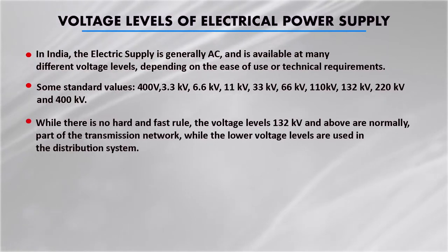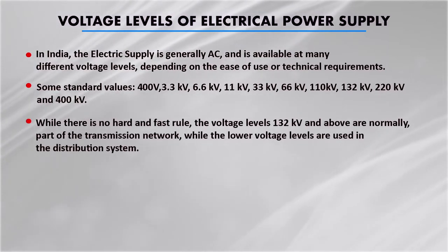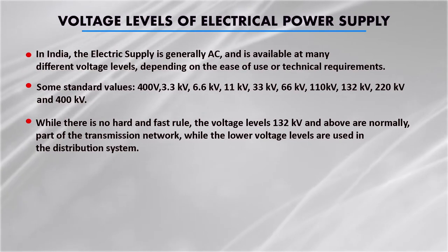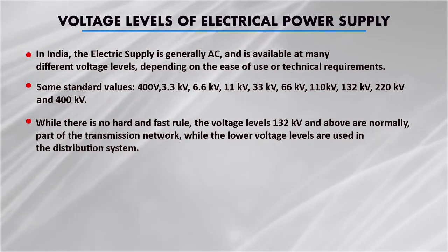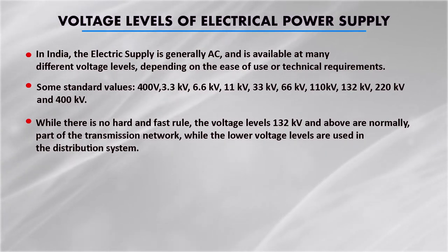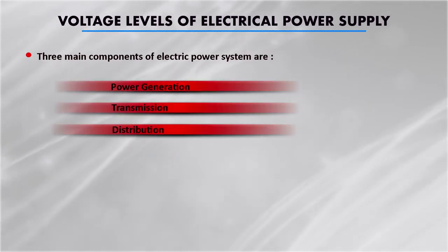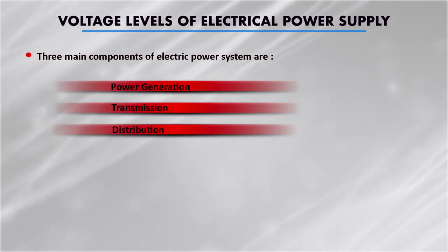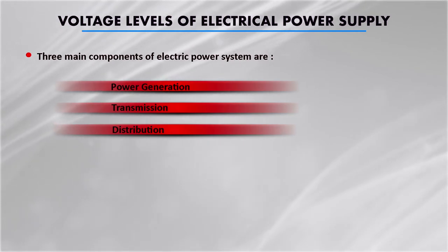There is no hard and fast rule about what voltage level should be used for the transmission network or distribution system. But generally, voltage levels of 132 kV and above are part of the transmission network — that means high voltages are considered for transmission of power supply. Lower voltage levels are used in the distribution system. Power generation, power transmission, and power distribution are the three basic components of the electrical power system.